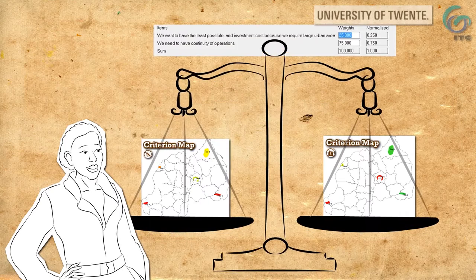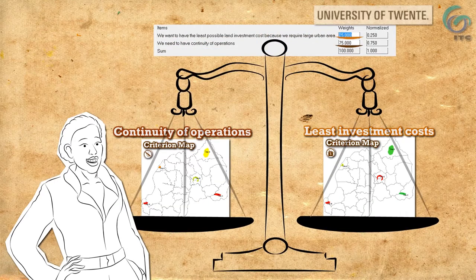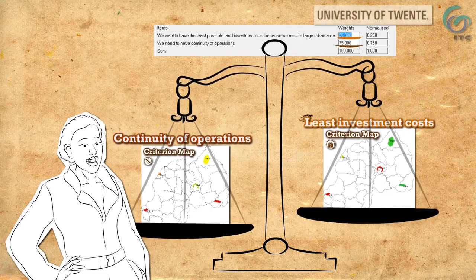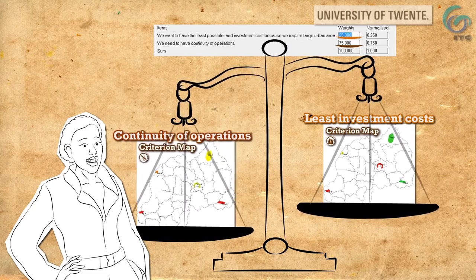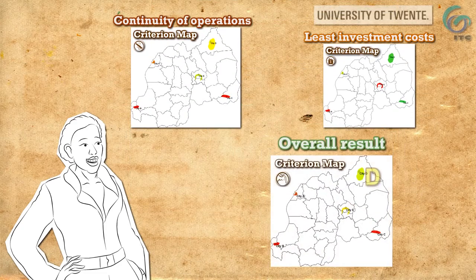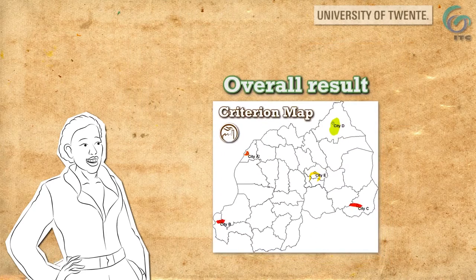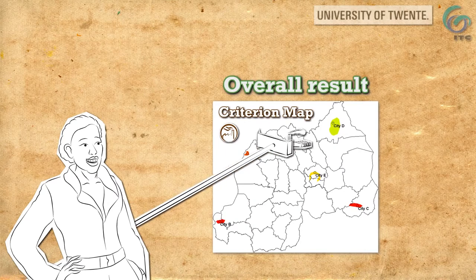Now you weigh the two criteria. Given a priority for electricity supply, the weighing scales result in City D being the best place for investment, followed by City E. Our decision maker found her answer and now knows where to invest in a factory.